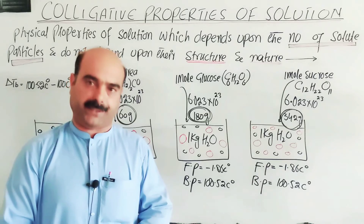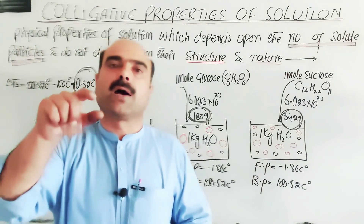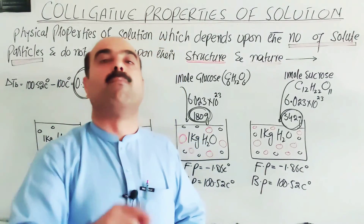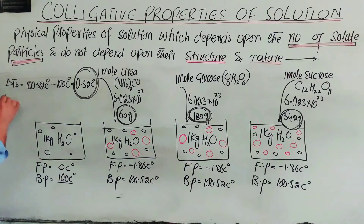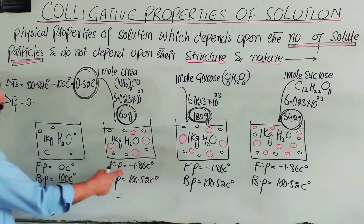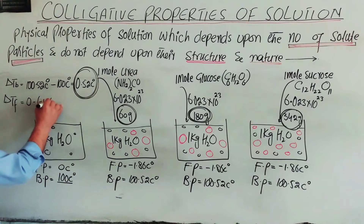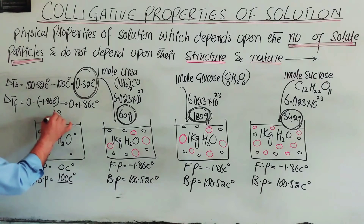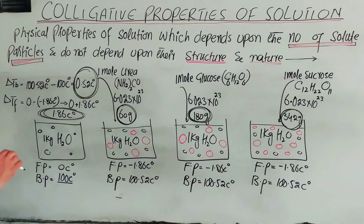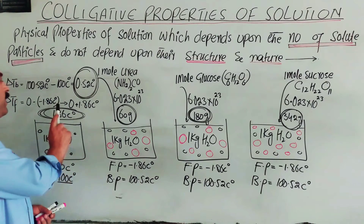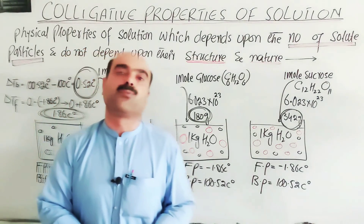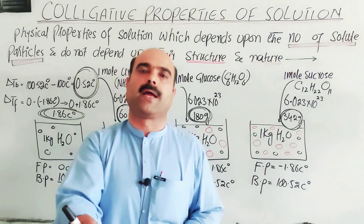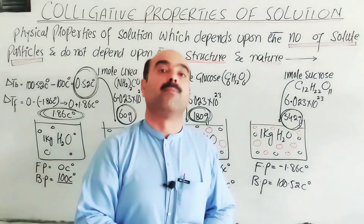The molal boiling point constant is the increase in boiling point when 1 mole of non-volatile, non-electrolytic solute is added to 1 kg of solvent. For freezing point, delta Tf is the change in temperature. The pure solvent is at 0°C and the solution is at minus 1.86°C, so delta Tf equals 0 minus (minus 1.86) = plus 1.86°C. The depression in freezing point is 1.86°C. The molal freezing point constant is the decrease in freezing point when 1 mole of non-electrolytic solute is added to 1 kg of solvent.